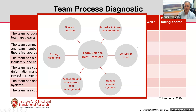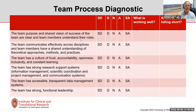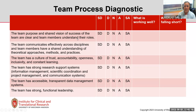For a group I worked with a couple summers ago, I created a quick diagnostic — using a strongly disagree to strongly agree scale. I asked the whole team questions: Is the team purpose and shared vision clear and do team members understand their roles? Does the team communicate effectively? How is the culture? I went down all of those and also had a qualitative section so they could talk about what's working well and where they were falling short.